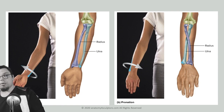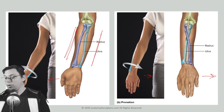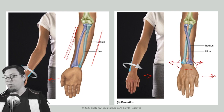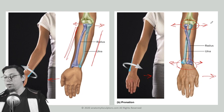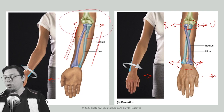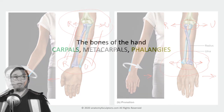In this photograph, the thumb is pointing laterally — that's supination, with radius and ulna parallel. When you pronate, the thumb points toward the body. On the humerus side, the radius stays outside and the ulna stays inside throughout both movements. However, on the hand side, the radius and ulna switch positions during pronation, crossing over each other.